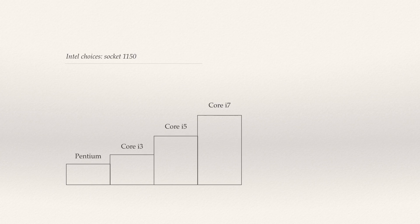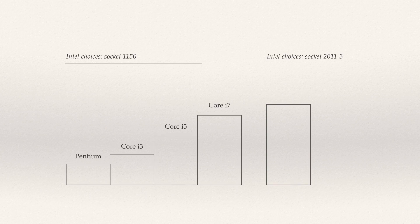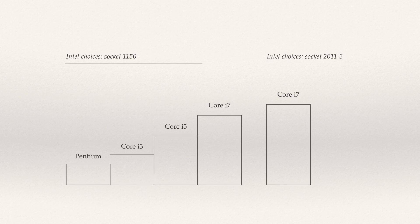There's also the socket 2011-3, which should really be reserved for power users and professionals. Here you have Core i7 processors that give you extreme performance with a very high power draw. They're expensive and have no integrated graphics processor, so you have to buy a graphics card separately. They are great for content creators but will also handle gaming without any problems.